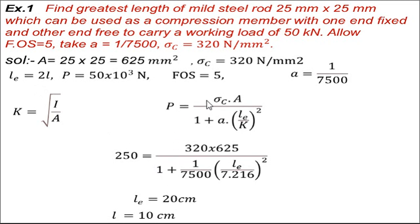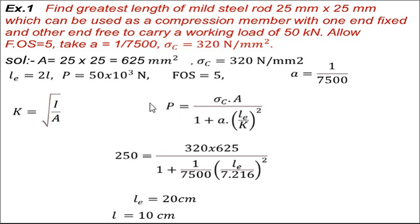So the greatest length of the mild steel rod is L = 10 cm. By using Rankine's formula you can solve problems and find the required greatest length. I hope you understood these two problems based on Rankine's theory and Rankine's formula. Thank you very much.